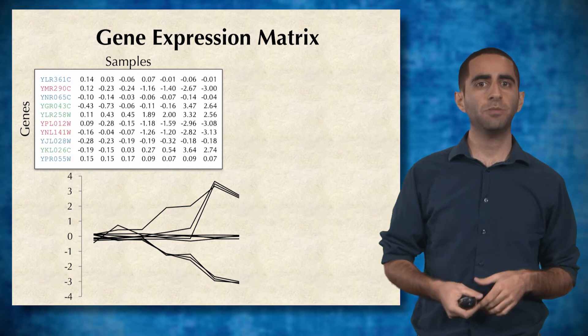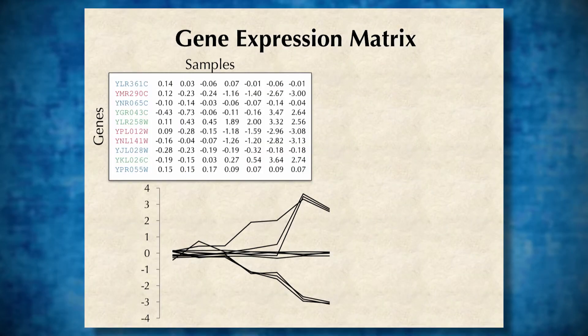In a gene expression matrix, you have all your different samples as columns and each gene as a different row, and you can plot the trajectory of your gene's expression as a function of whatever experiment you're doing.